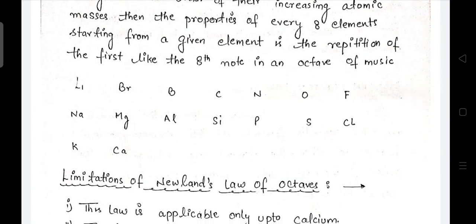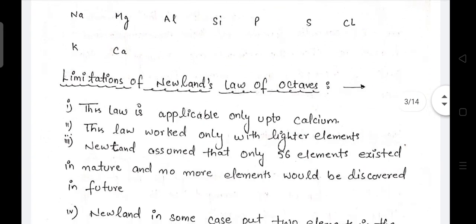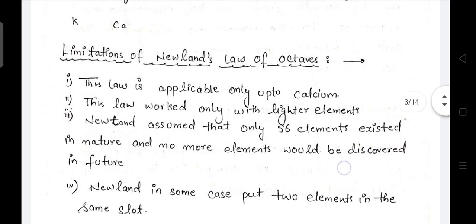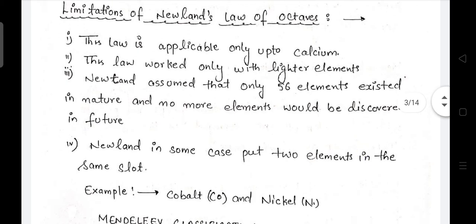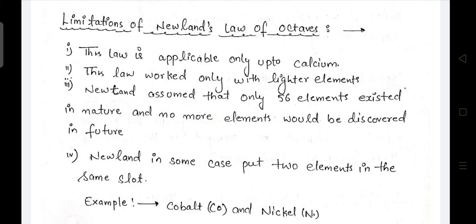What were the limitations? This law worked only up to calcium, it was only applicable with lighter elements. Newland assumed that only 56 elements existed in nature and no more elements would be discovered. And Newland in some cases put two elements in the same slot, like cobalt and nickel had to be placed in the same slot.